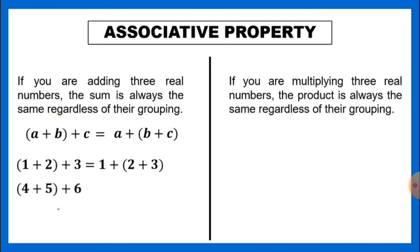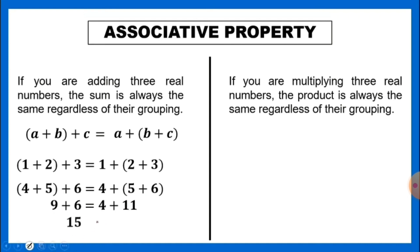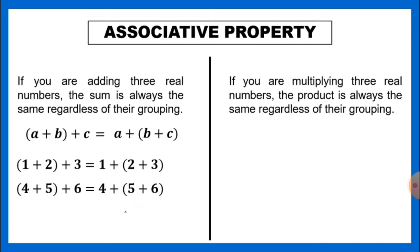Another example: the quantity (4 plus 5) plus 6 equals 4 plus the quantity (5 plus 6). We add 4 plus 5 to get 9, then 9 plus 6 equals 15. On the other side, we add 5 plus 6 to get 11, then 4 plus 11 also equals 15. Changing the groupings does not affect their result.